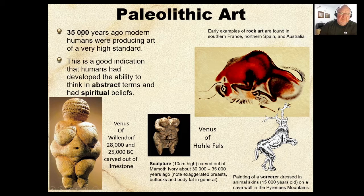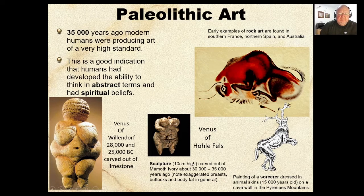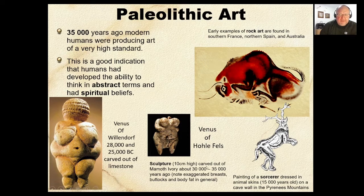By 35,000 years ago, humans were producing art of a very high standard. One of the oldest known pieces is the Venus of Hohle Fels — about 10 centimeters, carved out of mammoth ivory — believed to be between 30,000 and 35,000 years old. Somebody sat there and carved something 35,000 years ago — that is remarkable.